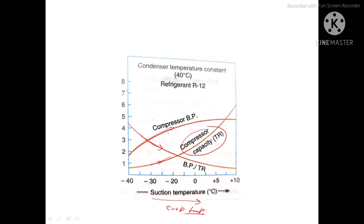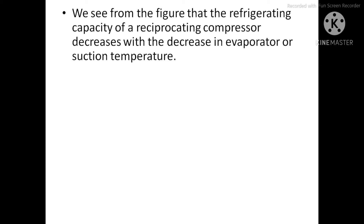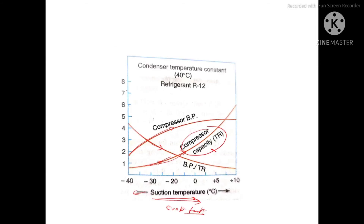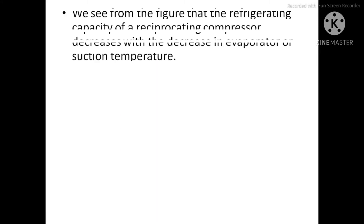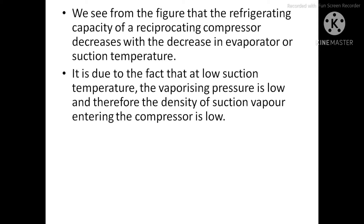From the graph, as the suction temperature increases the compressor capacity also increases, or conversely, as suction temperature decreases the compressor capacity decreases. This diagram is for refrigerant R12. We see from the figure that refrigerating capacity of a reciprocating compressor decreases with a decrease in evaporator or suction temperature.